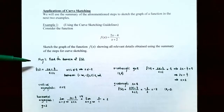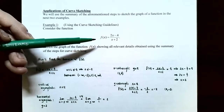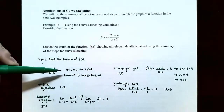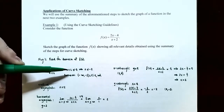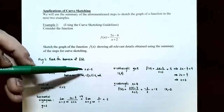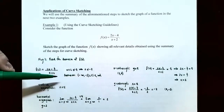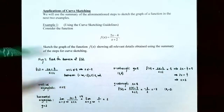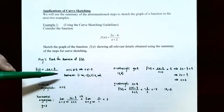Step one: find the domain of the function. This is a rational function, so we must avoid dividing by zero. The denominator x + 2 equals zero when x = −2, so x cannot equal −2. The domain in interval notation is (−∞, −2) ∪ (−2, ∞) — all real numbers except x = −2.